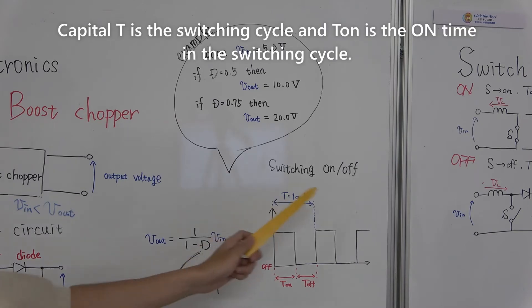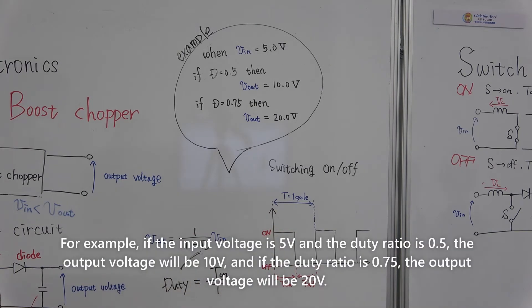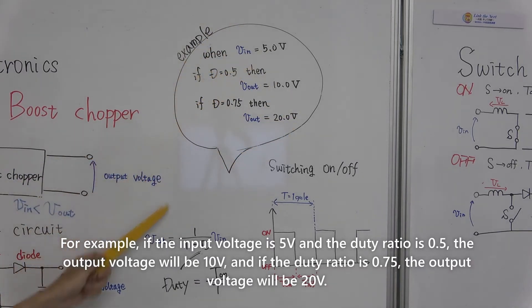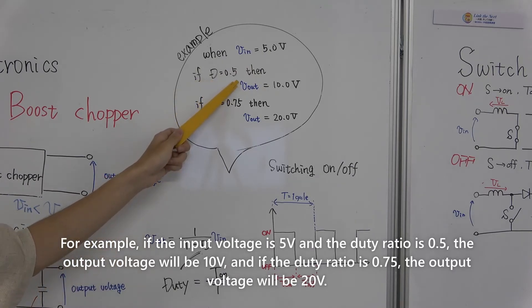Capital T is a switching cycle, and T_on is an on time in switching cycle. For example, if the input voltage is 5V and the duty rate is 0.5, the output voltage will be 10V.